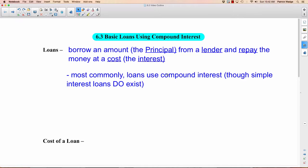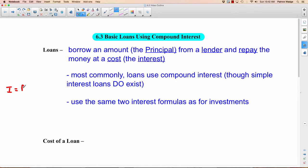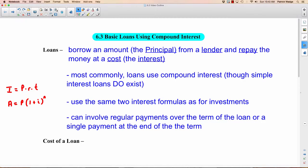Most commonly loans use compound interest, though simple interest loans do exist. The biggest difference between your investment interest and your loan interest is that the loan interest is a lot higher. The same two interest formulas are used as for investments. For simple interest, I = P × R × T. For compound interest, A = P(1 + R)^n, where n is the number of compounding periods. The interest can involve regular payments over the term of the loan or a single payment at the end of the term.